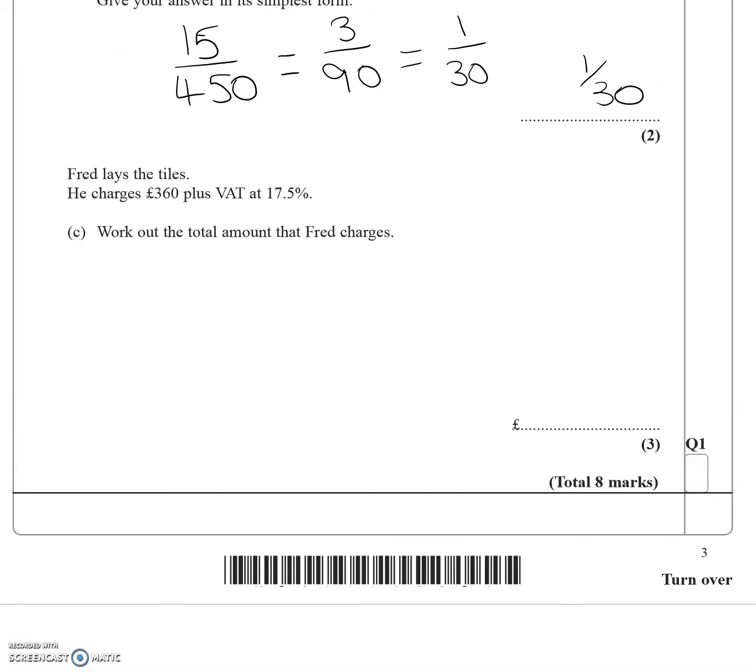And the very last one is Fred lays the tiles. He charges £360 plus VAT at 17.5%. So if I want to work out the VAT, I'm going to do 17.5%.